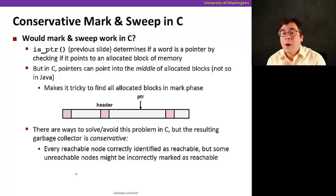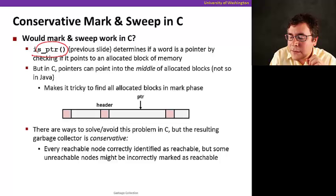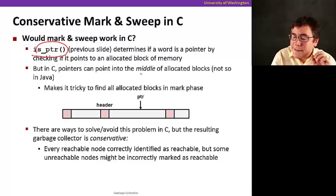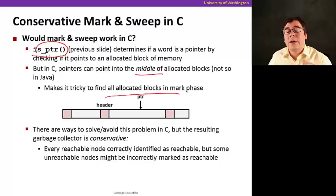Now, how would we make that work in C? Well, the challenge of doing this in C is that, remember that we need this function that says whether a certain location is a pointer. So in C, anything can be a pointer. So that's a little bit complicated, so we have to keep track of when you put pointers, you have to somehow tell the runtime system that a certain location is a pointer. But also in C, a pointer can point you to the middle of an allocated block, so that makes it tricky to find allocated blocks in the mark phase. So there are ways to solve this, as I said, by calling the runtime system conveying information and so on.